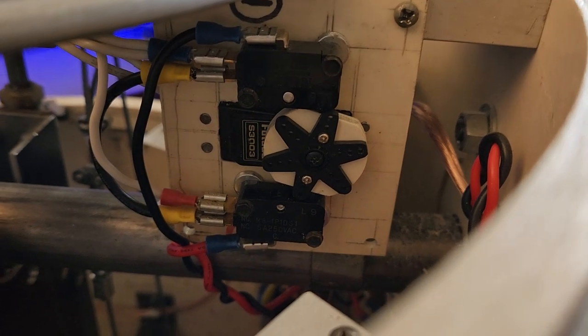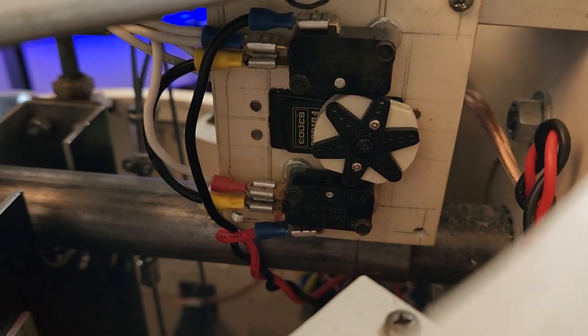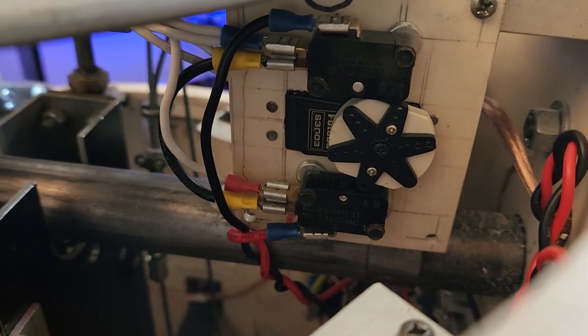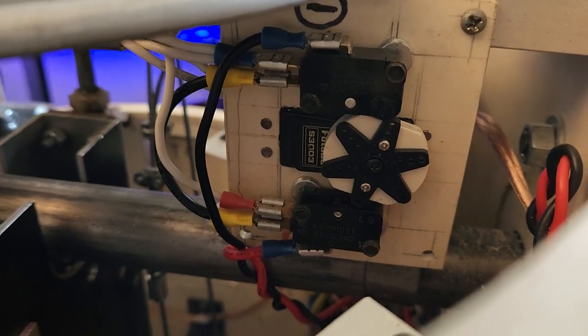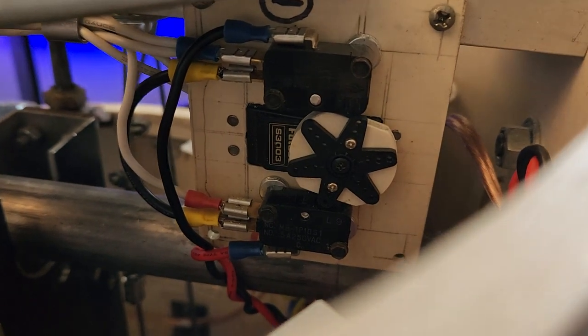So this right here is my dual pole, dual throw switch. It's not really a dual pole, dual throw switch. What it is, it's two micro switches, which have a common, a normally open and a normally closed. And when you put two of them together, it makes a dual pole, dual throw.